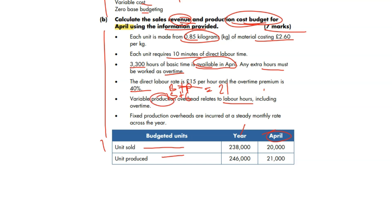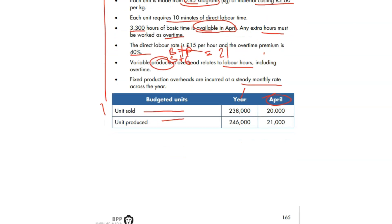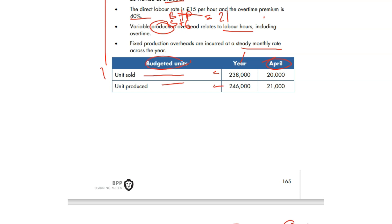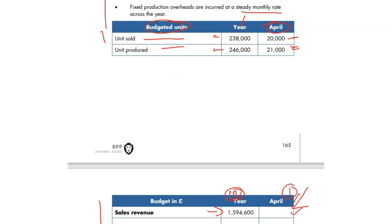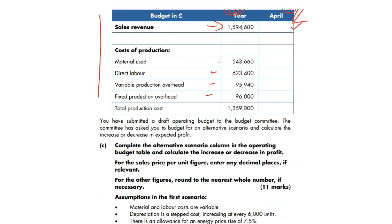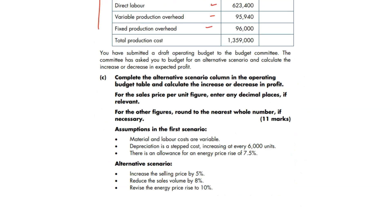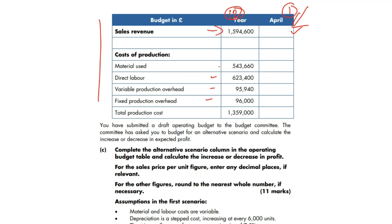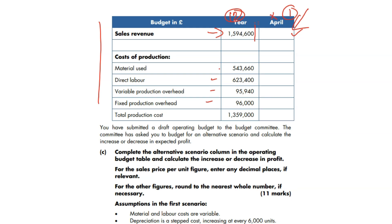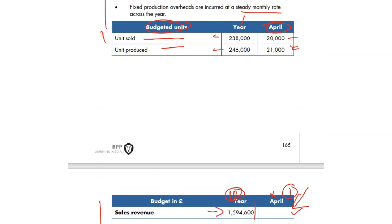Fixed production overheads are incurred at a steady monthly rate across the year. Units sold and units produced are budgeted for a year and the month of April is given — slightly different production and sales figures. There could be a closing inventory adjustment; maybe needed, maybe not. Now the first requirement here: sales. If this is the yearly sales, divide by the number of units budgeted and multiply by the number of units to be sold for the month of April.